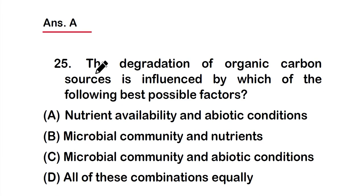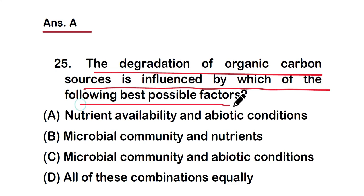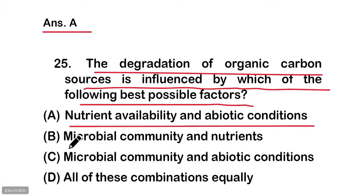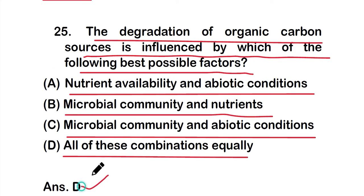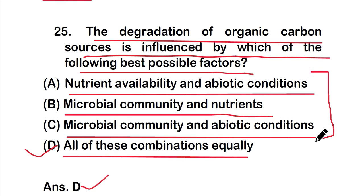Question number 25: The degradation of organic carbon sources is influenced by which of the following best possible factors? Options: A) nutrient availability and abiotic conditions, B) microbial community and nutrients, C) microbial community and abiotic conditions, or D) all of these combined equally. The right answer is option D — all of these combinations equally. Nutrient availability and abiotic conditions, microbial community and nutrients, and microbial community and abiotic conditions are all responsible.